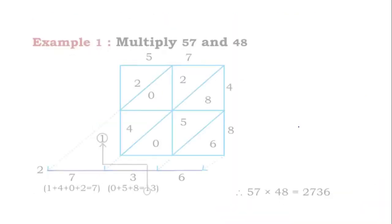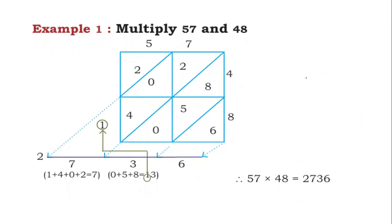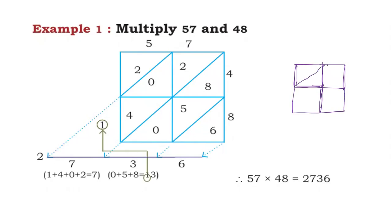See another example: multiply 57 and 48. Here we have 2-digit numbers given. Put 4 boxes and join the diagonal corners. Write 4 and 8 on the side. Starting from the unit digit, that means from 8: 8 times 7 is 56 — put 6 and 5. Then 8 times 5 is 40 — put 0 and 4.